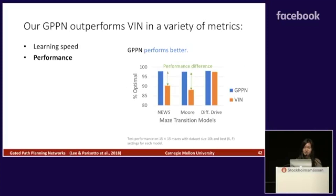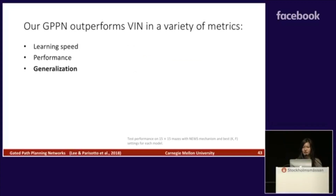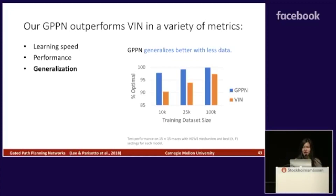Here we plot the test performance for different maze transition models: NEWS, Moore, and differential drive. GPPN performs better, especially for the NEWS and Moore domains. Next is generalization — here we vary the training dataset size between 10,000, 25,000, and 100,000. GPPN generalizes better with less data, and as we decrease the dataset size, the performance difference becomes greater.